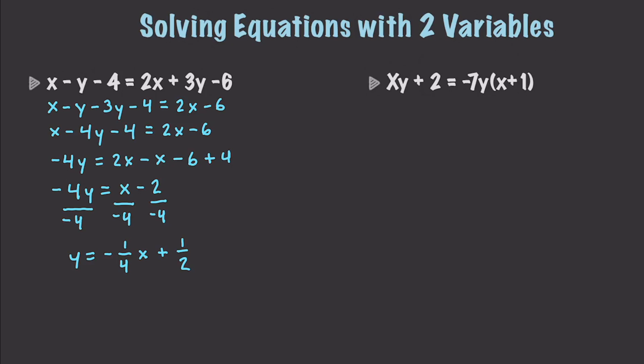We have xy plus 2 is equal to negative 7y times x plus 1. So I'm just going to leave the left side the same here for now. It's very important to know how to get these x's and y's separated from each other. So we will just multiply through and we will get negative 7xy minus 7y. And then I can add 7xy to both sides. So we'll have xy plus 7xy. Let's also subtract the 2 from this. So that leaves negative 7y minus 2. And if we combine these terms, we get 8xy is equal to negative 7y minus 2. Then we can divide all the terms by 8y.